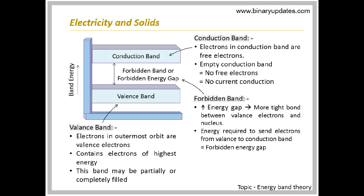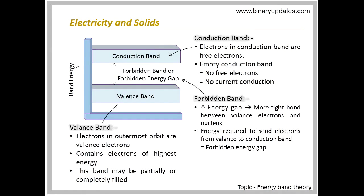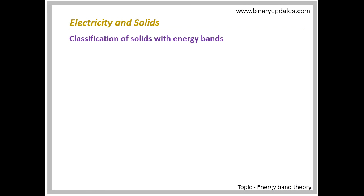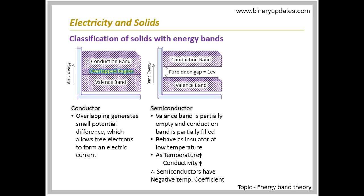The increase in forbidden gap reduces the number of free electrons, which results in more tight bonding between valence electrons and the nucleus of an atom. The forbidden gap defines the energy required to send electrons from the valence band to the conduction band. In the case of conductors, because of overlapping of the conduction and valence bands, the forbidden gap does not exist. Hence, conductors have very high conductivity. In the case of semiconductors, the conductivity is low compared to conductors, hence a very small forbidden gap exists.